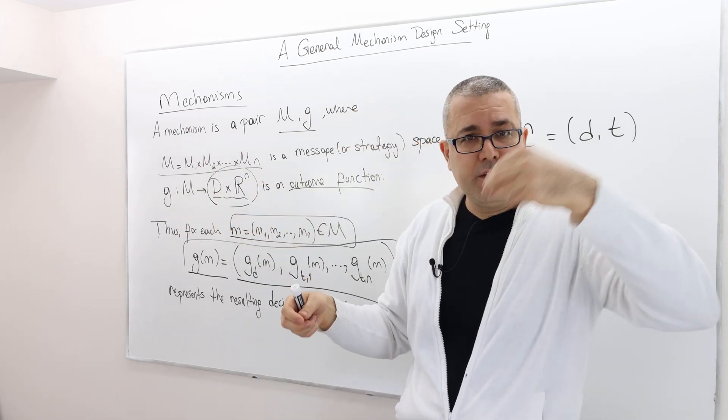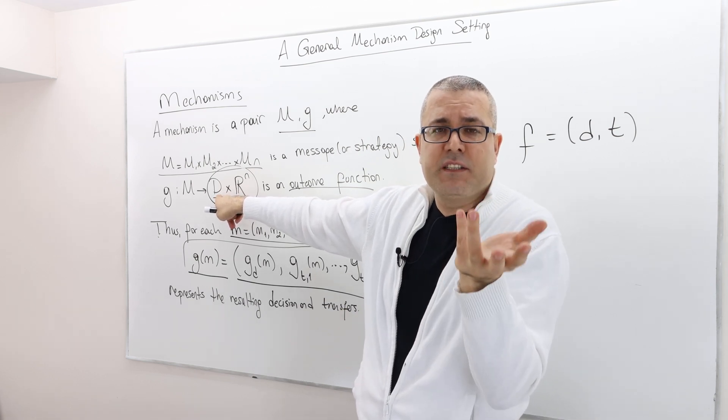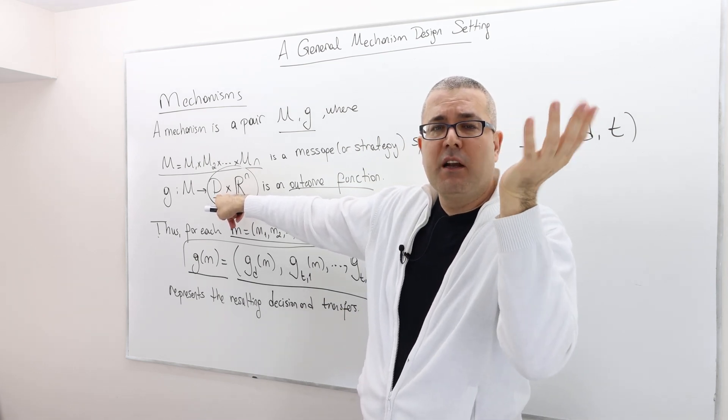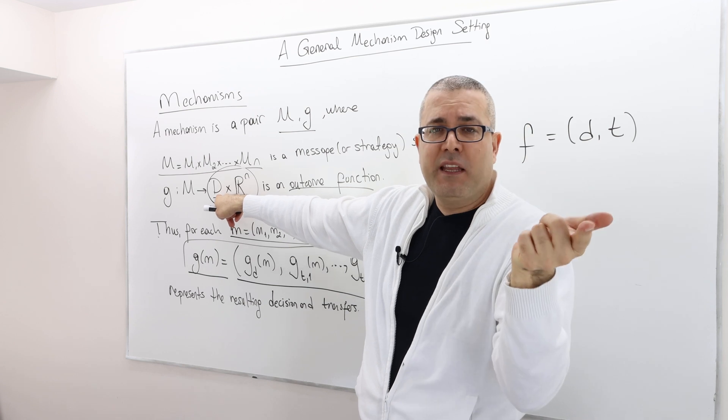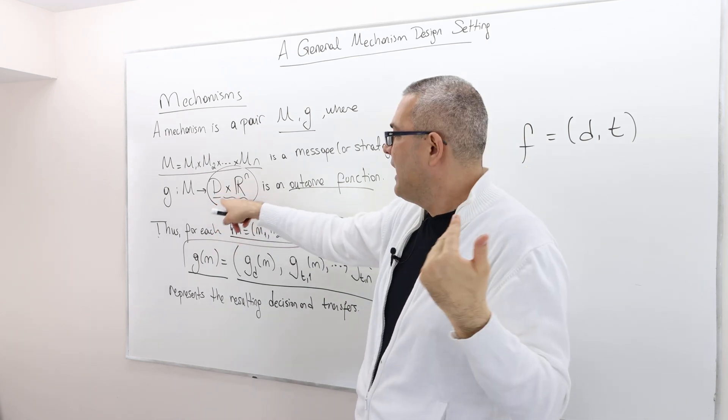Remember, D is very simple. The highest bidder - I'm sorry, the bidder with the highest bid wins and everybody else loses. So this is the D and then R^N. So what is R^N?